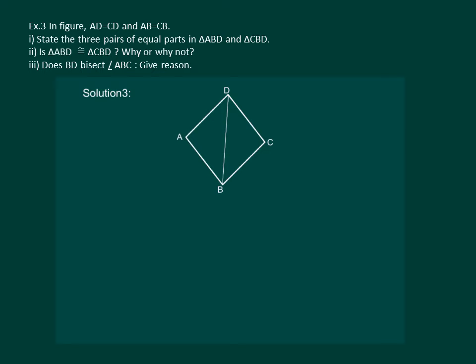In the given figure, AD is equal to CD, and AB is equal to CB.